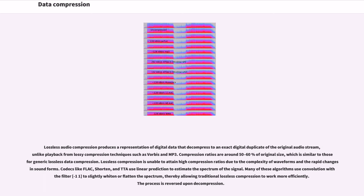Lossless audio compression produces a representation of digital data that decompresses to an exact digital duplicate of the original audio stream, unlike playback from lossy compression techniques such as Vorbis and MP3. Compression ratios are around 50 to 60 percent of original size, which is similar to those for generic lossless data compression. Lossless compression is unable to attain high compression ratios due to the complexity of waveforms and the rapid changes in sound forms.